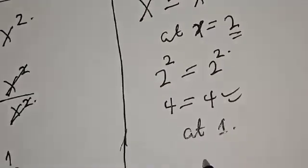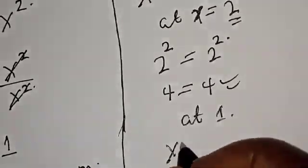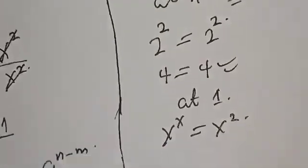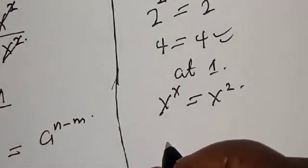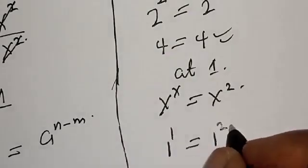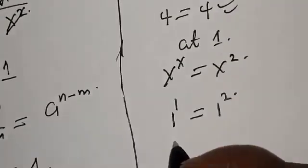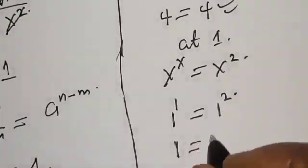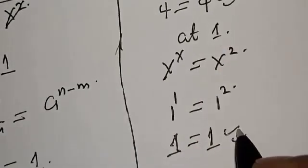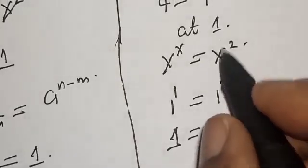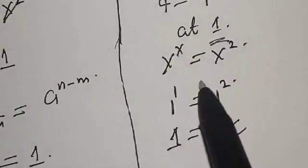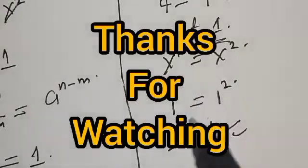Let's check at s equal to one. We have one raised to power one is equal to one square. One raised to power one is one, and one square is one, meaning the left hand side equals the right hand side. We satisfy the given equation at s equal to one. If you have enjoyed the class, please don't forget to like, share, comment, and subscribe. Thank you.